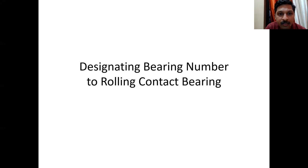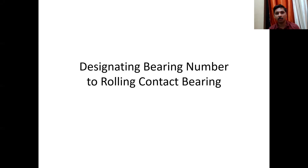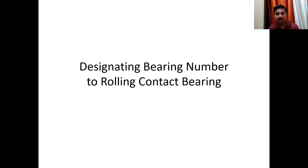Hello friends. Today we will discuss how to designate the bearing number to the rolling contact bearing. Bearing numbers are sometimes alphanumeric and sometimes numeric numbers. These numbers have some digits, and each and every digit has some significance — meaning every digit of that number represents some specification of that particular bearing.